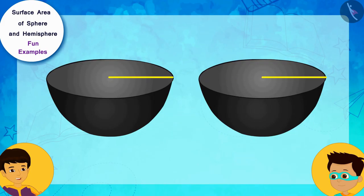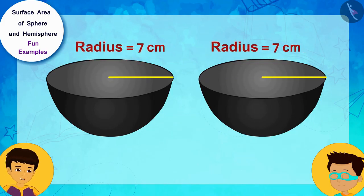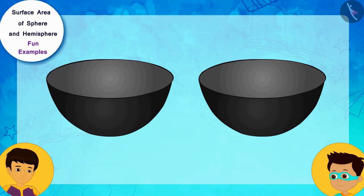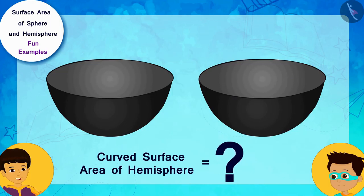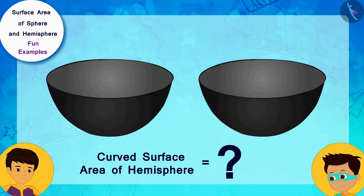This means the internal radius of each bowl is 7 centimeters. But there is a problem. I do not remember the formula for the curved surface area of the hemisphere.